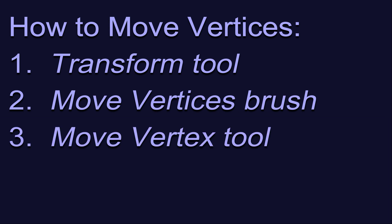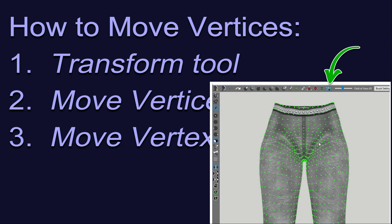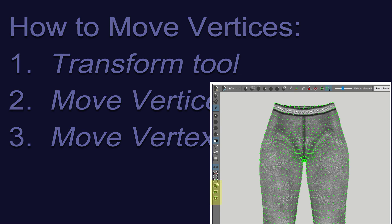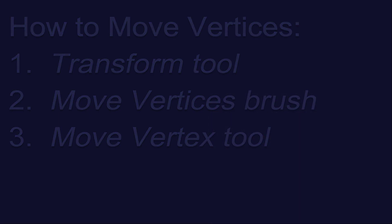For really precision editing, the Move Vertex tool is a great option, but note that its function is true to its name and it literally only moves one vertex at a time. Sometimes that's what you really need though, so don't forget about this option. When you select either the brush or the Move Vertex tool, some additional buttons will appear over here on the left. We will cover those as we work with each tool during this video.